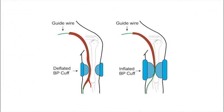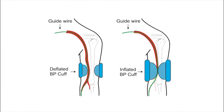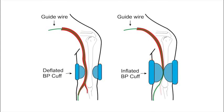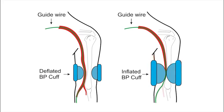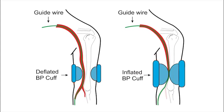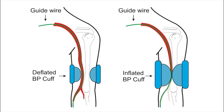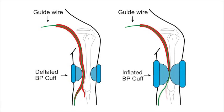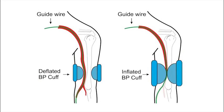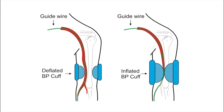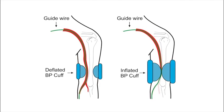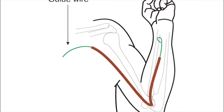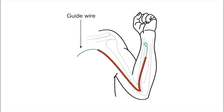It is believed that it is not possible, or very difficult, to cannulate the LIMA graft using the right transradial approach. Because after wiring the left subclavian artery, when the catheter is negotiated from the arch into the left subclavian artery, there is a tendency for the assembly to flip either into the ascending or descending aorta. If the angle of the left subclavian is more acute, the operator will have more difficulty.